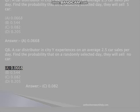Q8. A car distributor in City Y experiences on an average 2.5 car sales per day. Find the probability that on a randomly selected day, they will sell no car. A, 0.0668, B, 0.544, C, 0.082, D, 0.205. Answer: C, 0.082. Pythonhomeworkhelp.com.